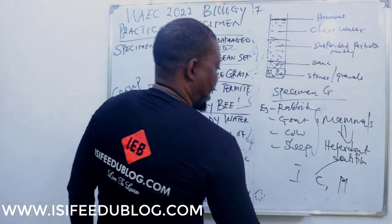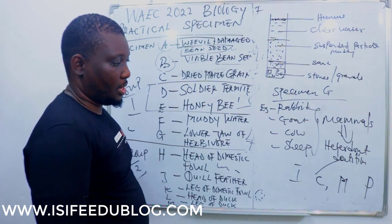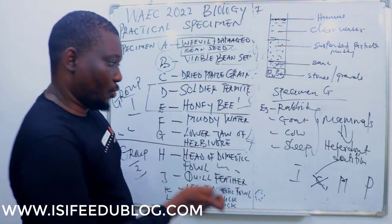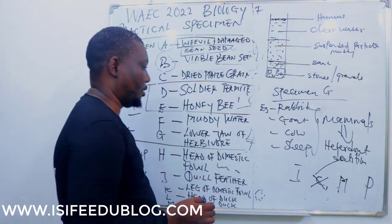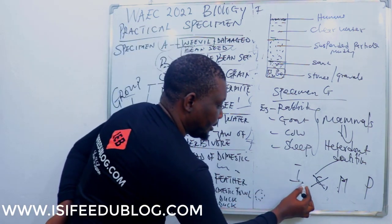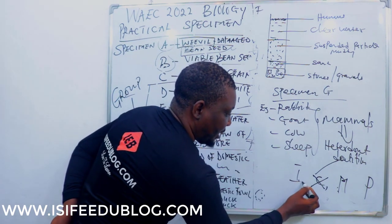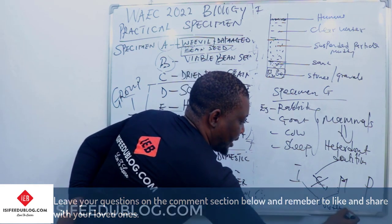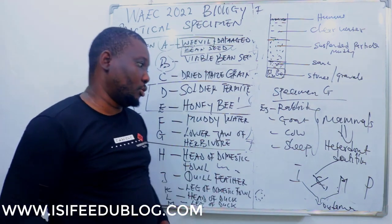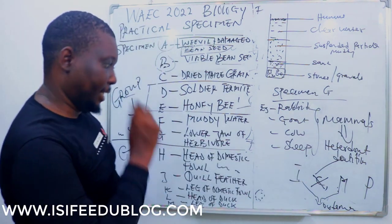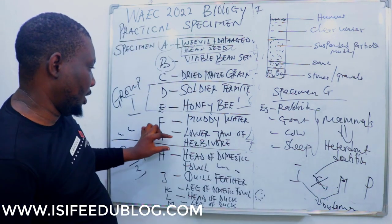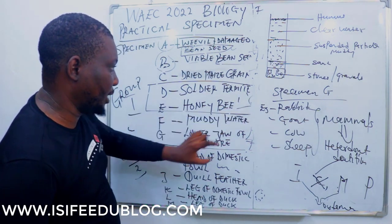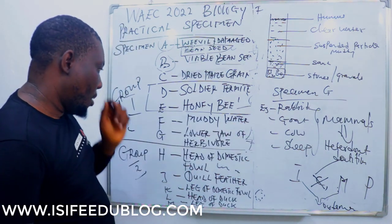Unfortunately, this herbivore lacks canine teeth. The space that you see in the lower jaw of a herbivore is a space where the canine is not found. That space is called a diastema — where manipulation of vegetation takes place. So there are no teeth in this space. Examples of animals with this type of teeth include rabbits, goats, cow, and sheep.